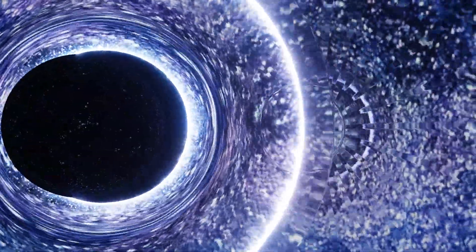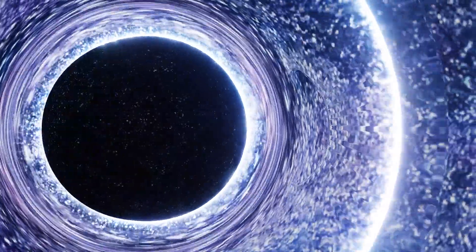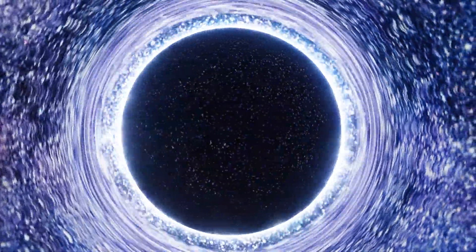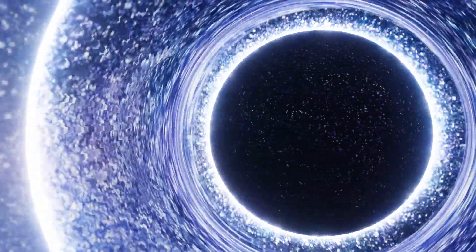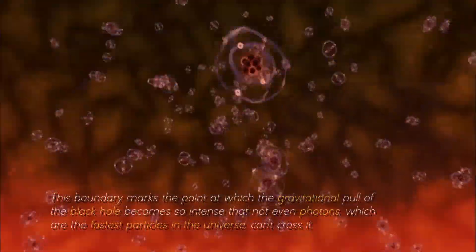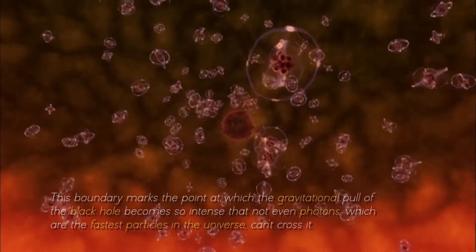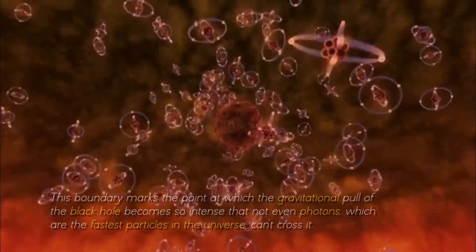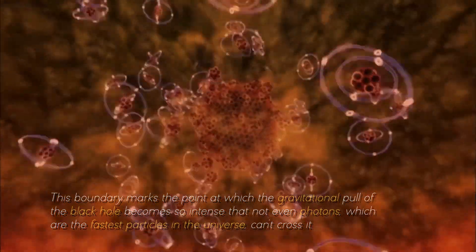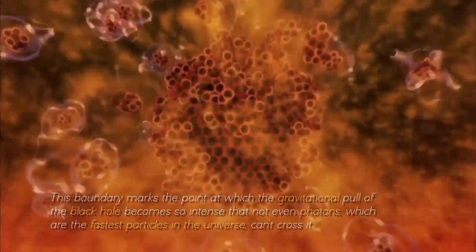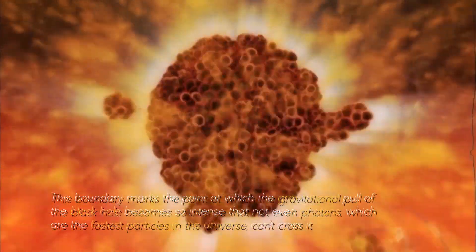A fundamental characteristic of a black hole is its event horizon, an invisible boundary beyond which escape becomes impossible, even for light. This boundary marks the point at which the gravitational pull of the black hole becomes so intense that not even photons, which are the fastest particles in the universe, can cross it.